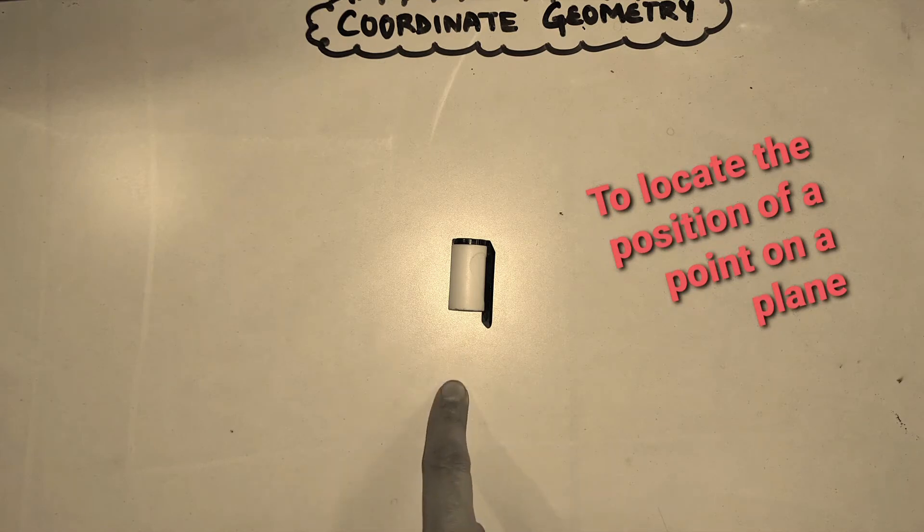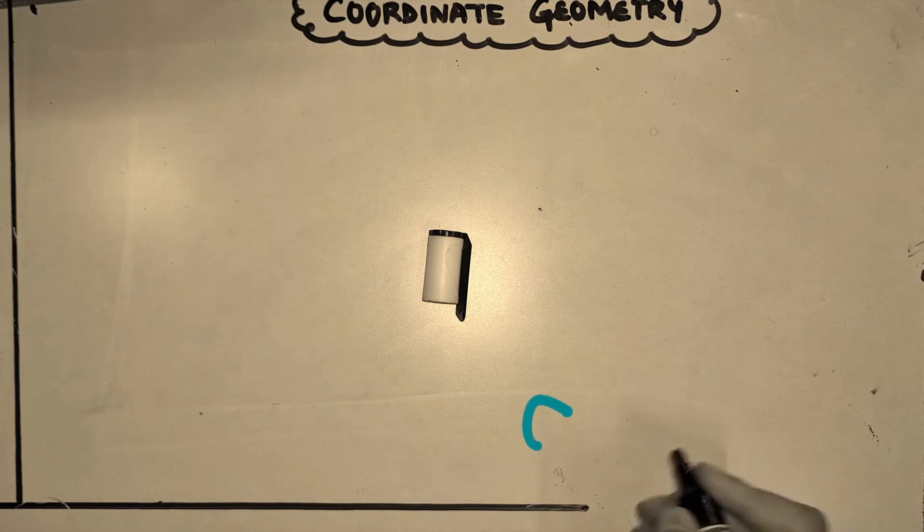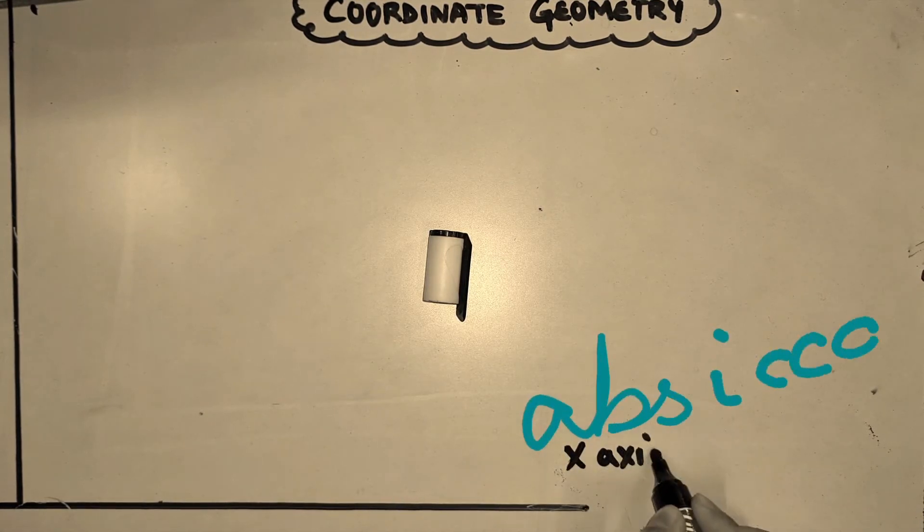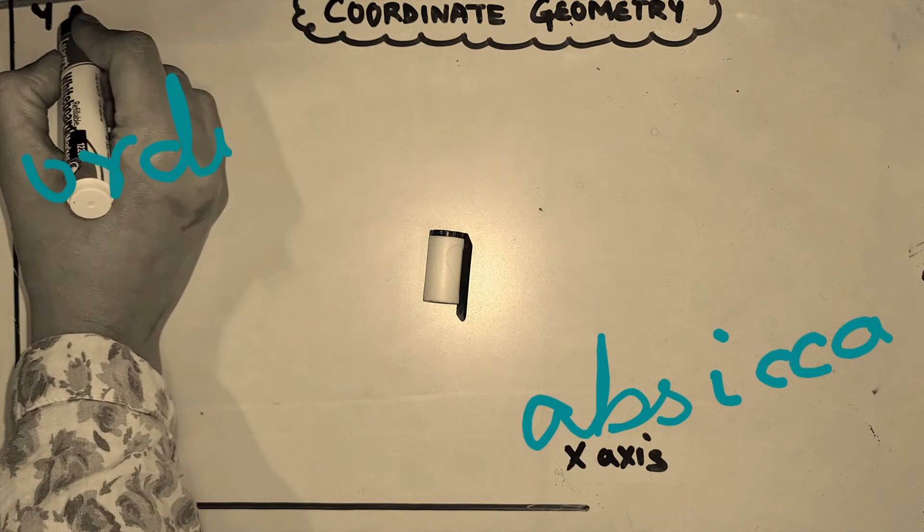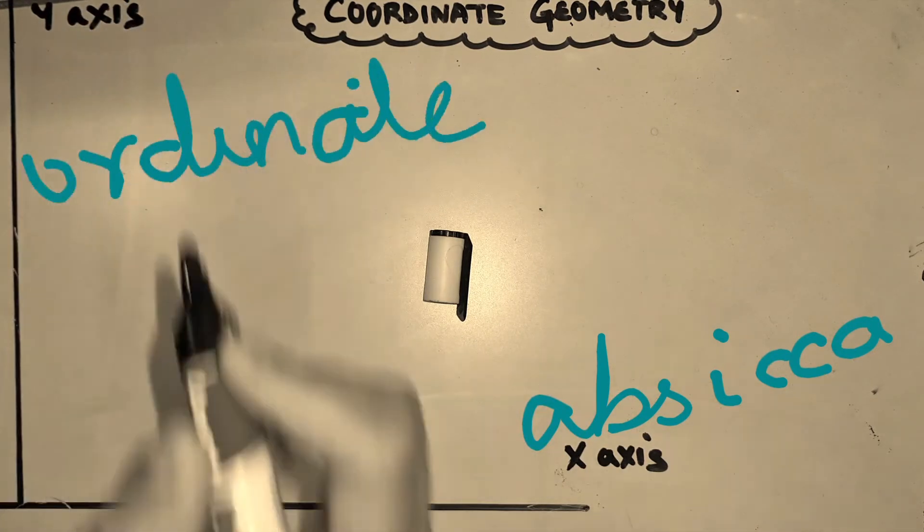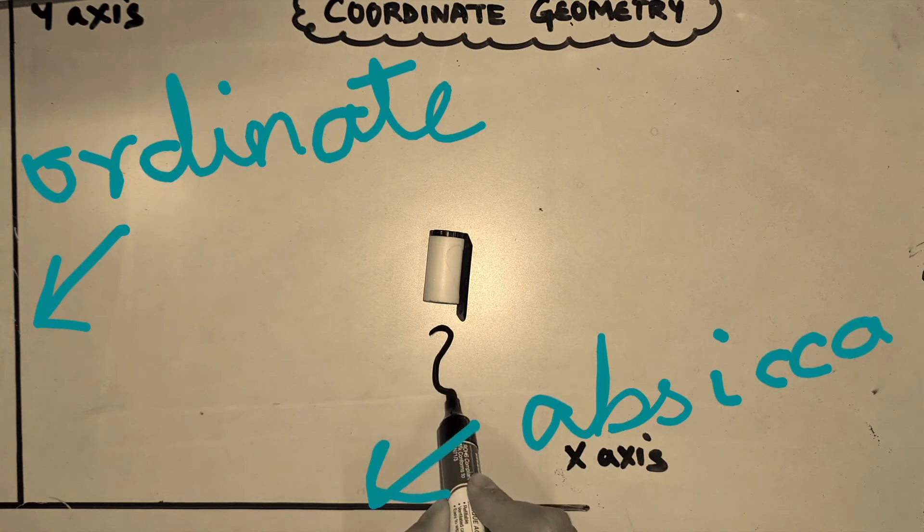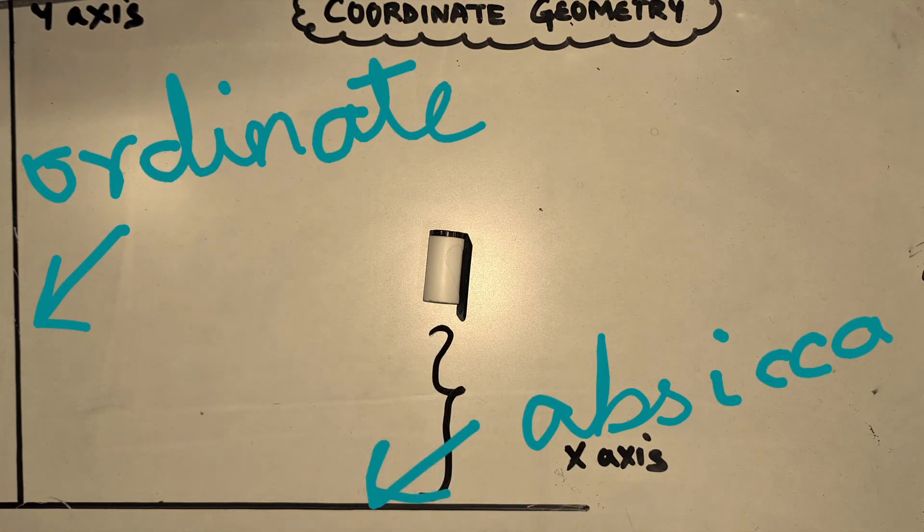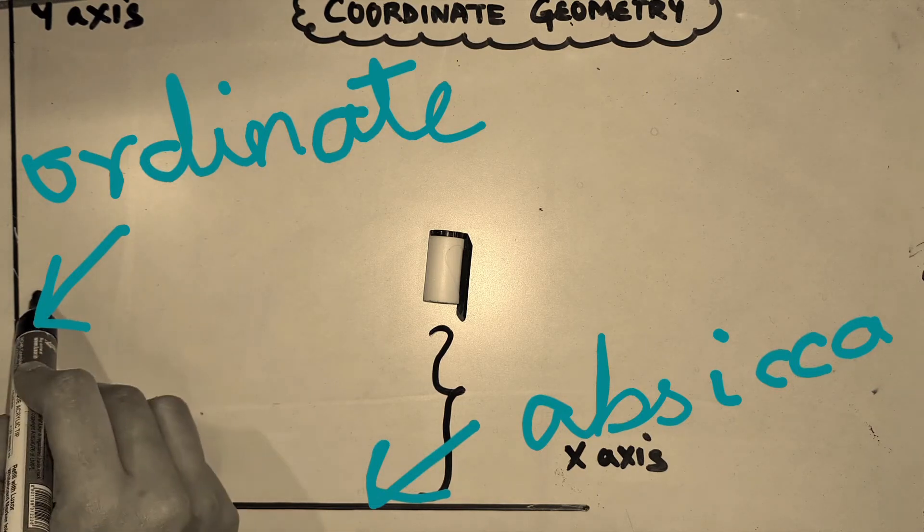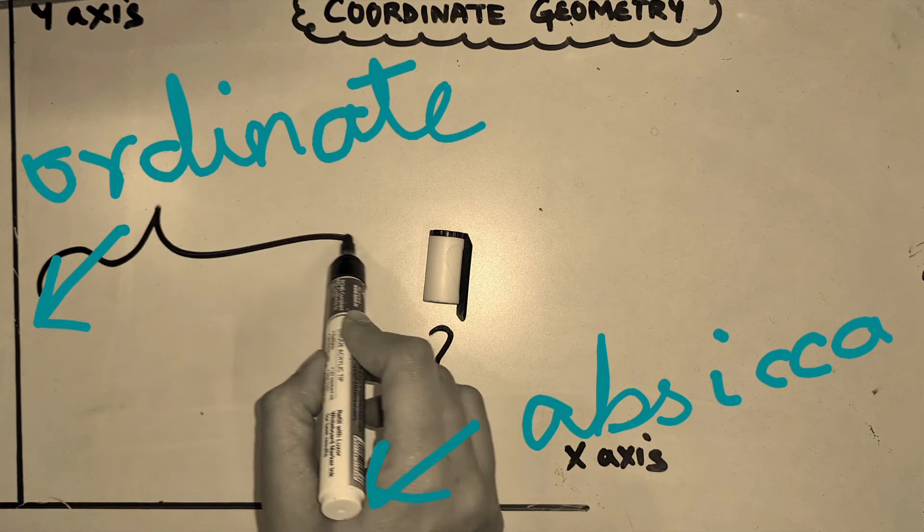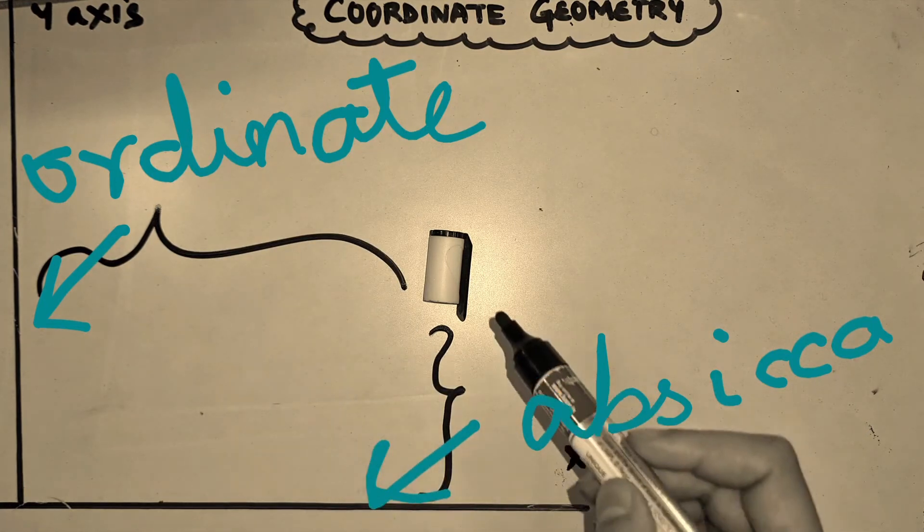Now suppose if I make an x-axis here and y-axis here, and then measure the distance from the y-axis as well as the distance from the x-axis, I'll be able to tell the exact position of this cap.